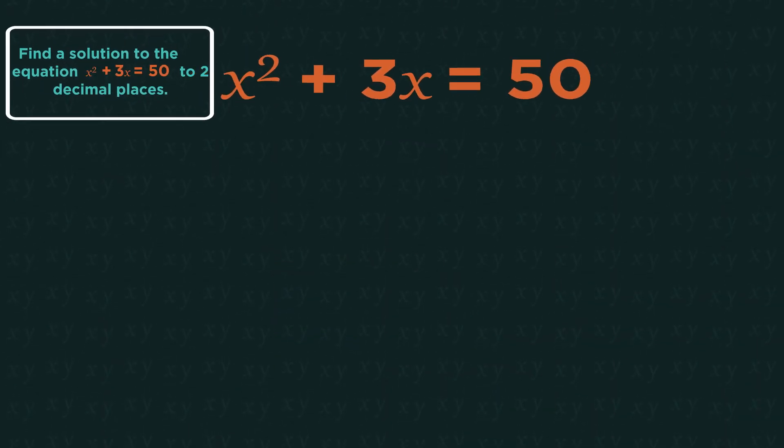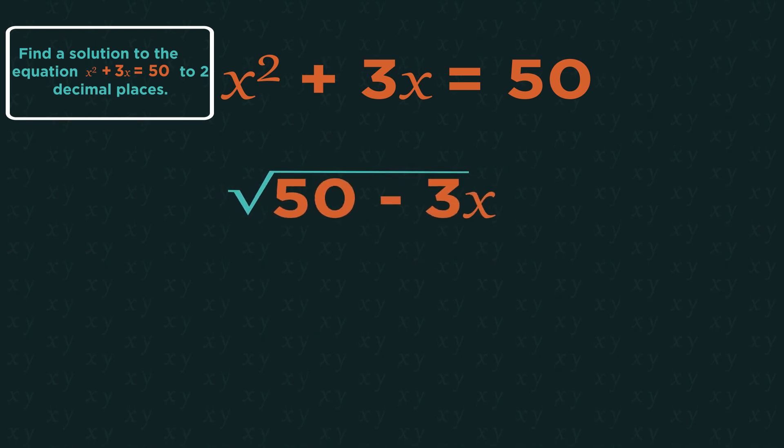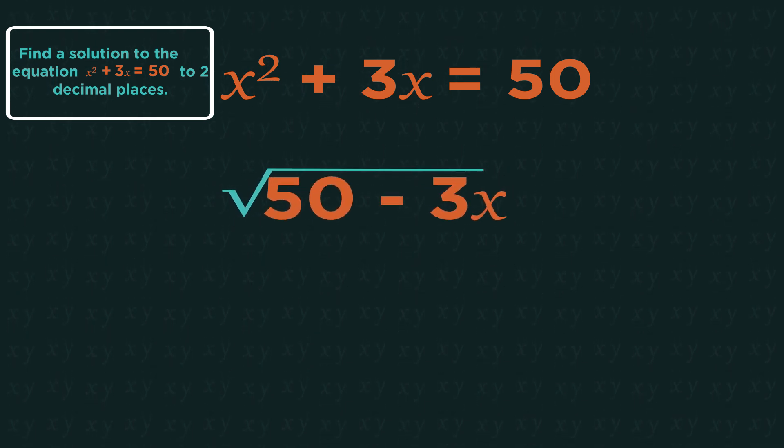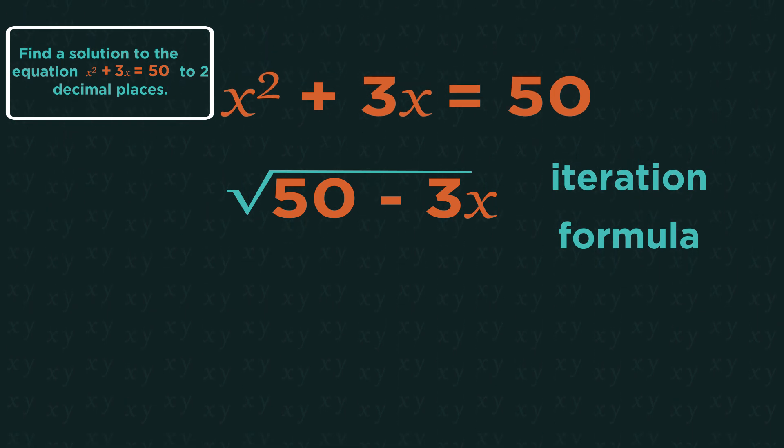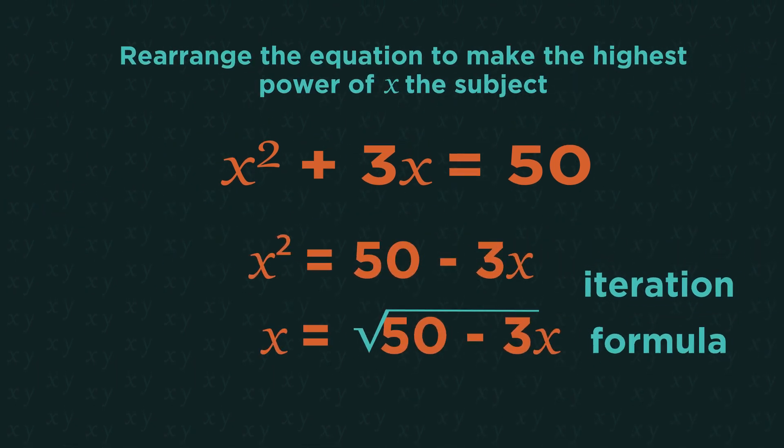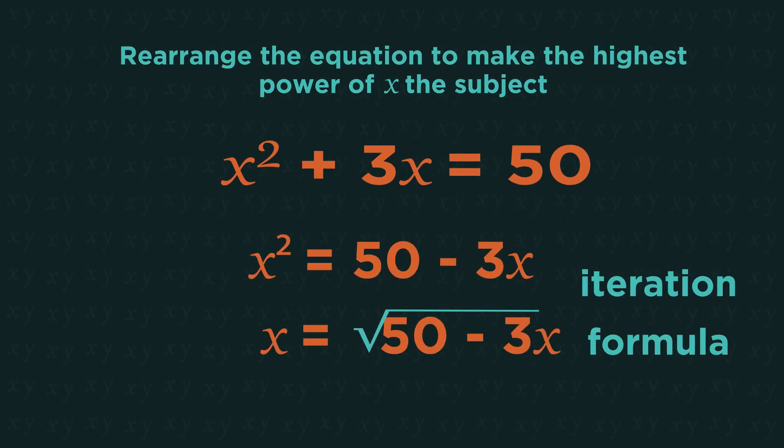Although the question was this formula, we used a rearranged version in our flow diagram. This rearranged version is called the iteration formula. You are usually given the iteration formula in the question, but if you aren't, it's quite simple. You simply need to rearrange the equation to make the highest power of x the subject. We then repeatedly use this iteration formula to find the solution.